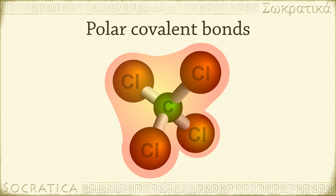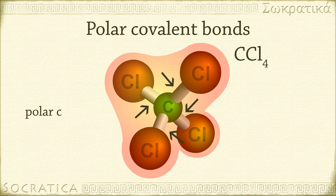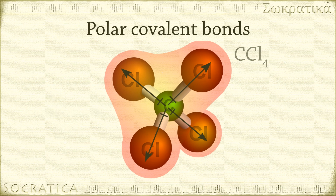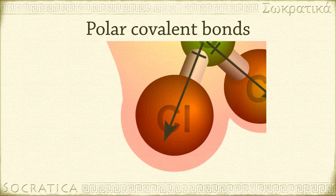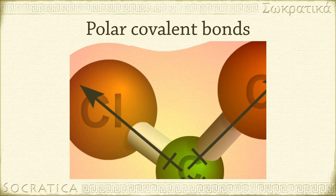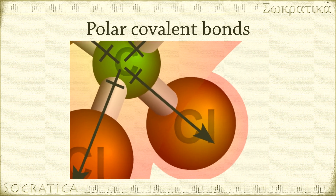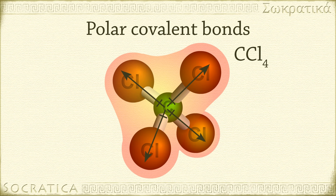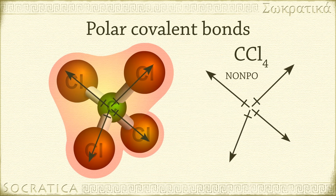Consider the carbon tetrachloride molecule, CCl4. Chlorine is more electronegative than carbon, so this molecule has four polar covalent bonds. You might think that adding the four bonds together, this molecule is going to be very polar as a result. But actually, when you look at the three-dimensional structure, you see that the four bonds point in four opposite directions, so they cancel each other out. You can't find one side of CCl4 that is more negative or positive than the other, so carbon tetrachloride as a whole is a nonpolar molecule.